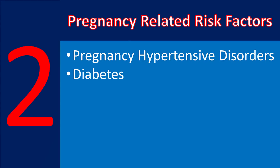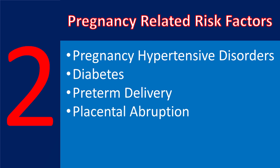Gestational diabetes is associated with an increased risk of developing type 2 diabetes and atherosclerotic cardiovascular disease. Preterm delivery — defined as spontaneous delivery prior to 37 weeks of gestation — is associated with increased risk of developing atherosclerotic cardiovascular disease compared with those who deliver at term. Adverse cardiovascular outcomes also occur in women delivering an infant with fetal growth restriction.